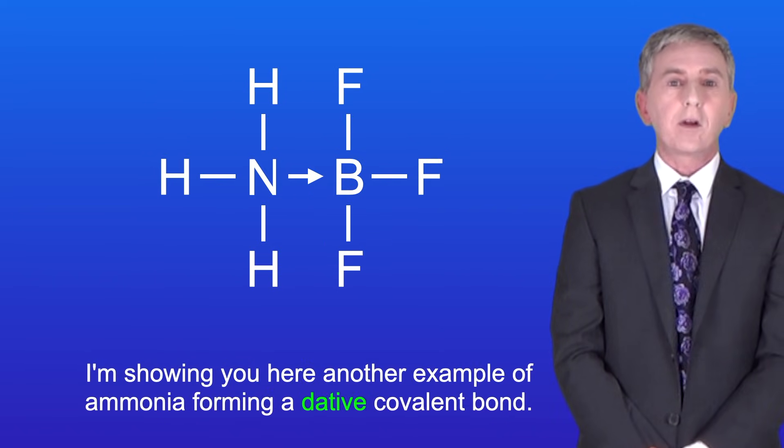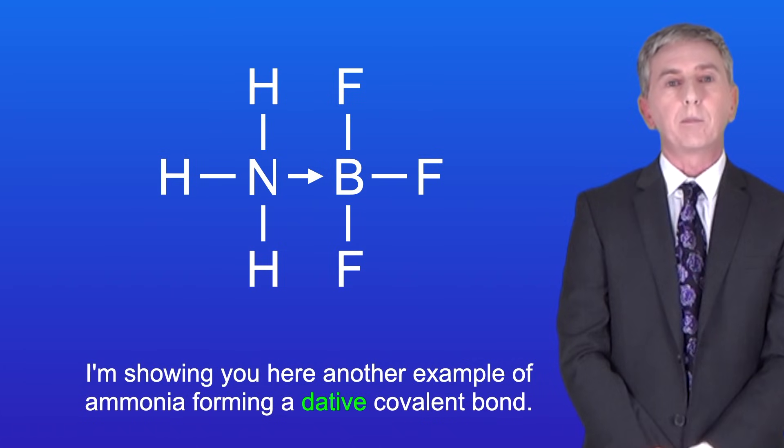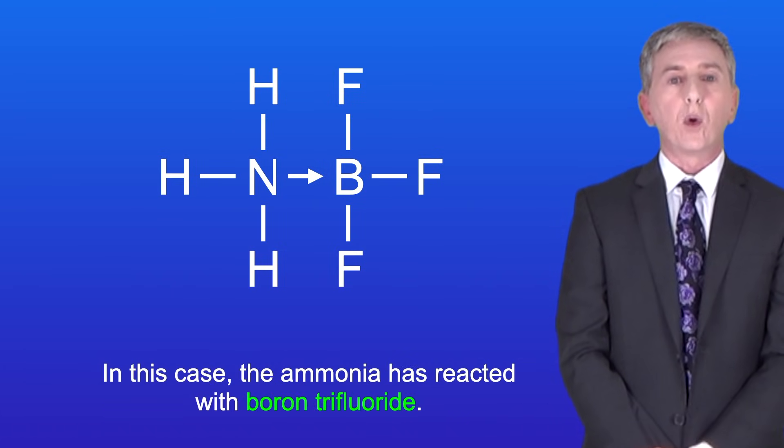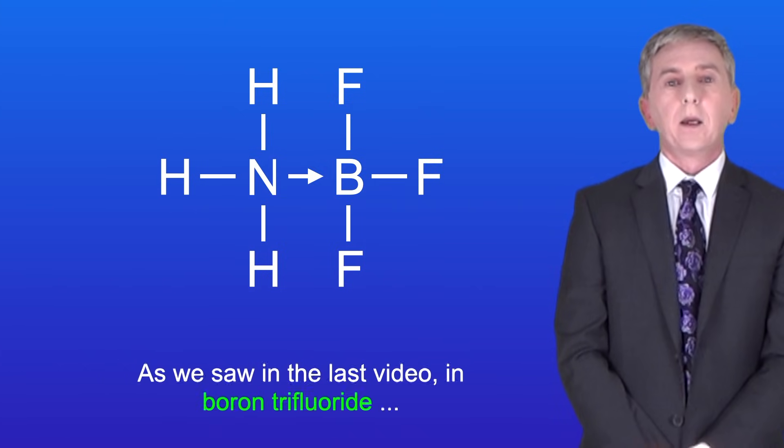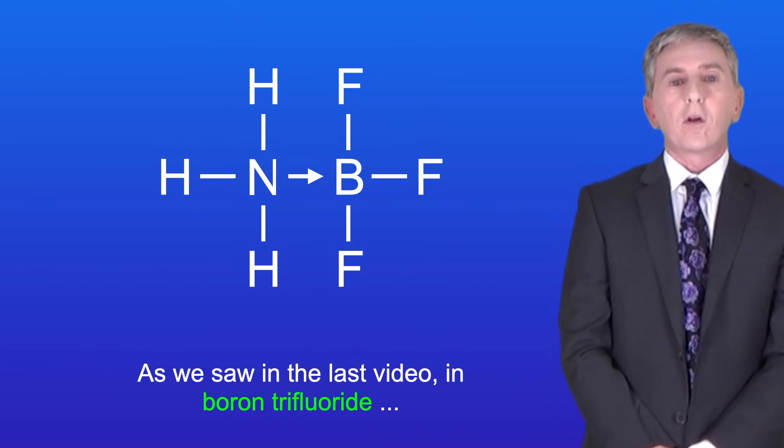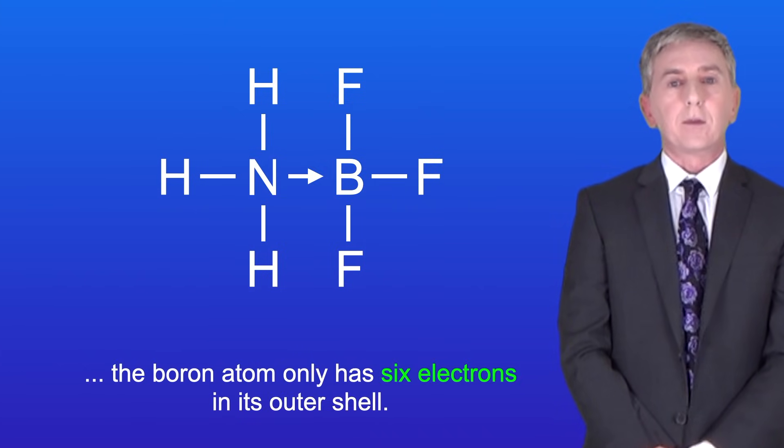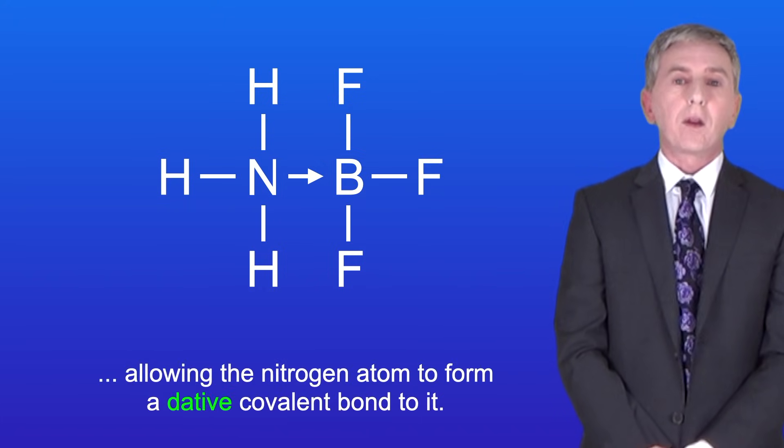I'm showing you here another example of ammonia forming a dative covalent bond. In this case, the ammonia has reacted with boron trifluoride. As we saw in the last video, in boron trifluoride, the boron atom only has six electrons in its outer shell. This makes it electron deficient, allowing the nitrogen atom to form a dative covalent bond to it.